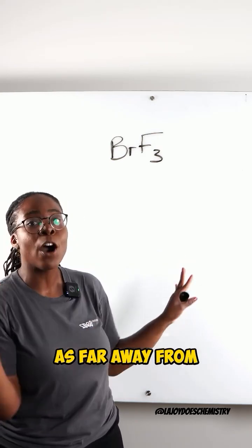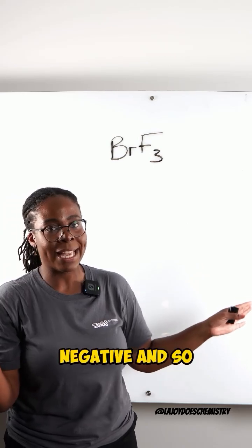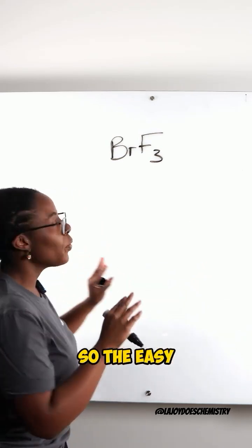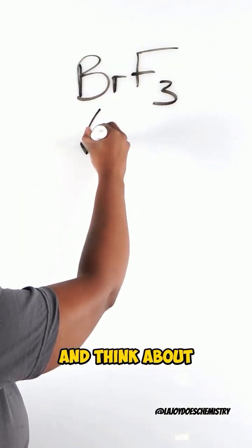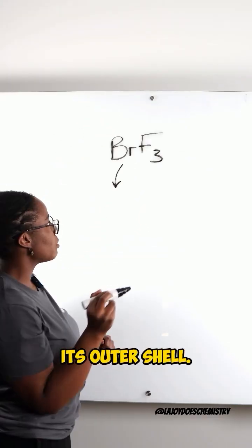We try to get the electron pairs as far away from each other as possible because they're negative and so they repel. The easy way to do this is with a counting method. We start with our central atom and think about how many electrons it has in its outer shell.